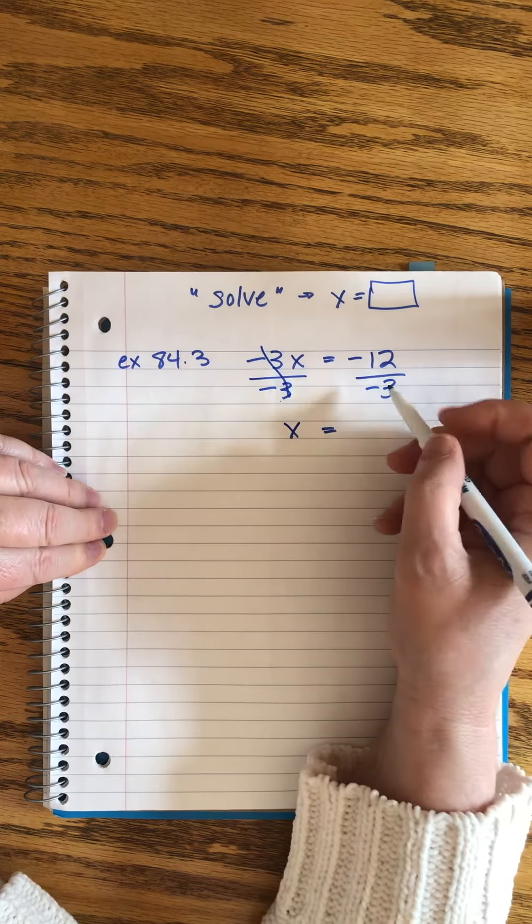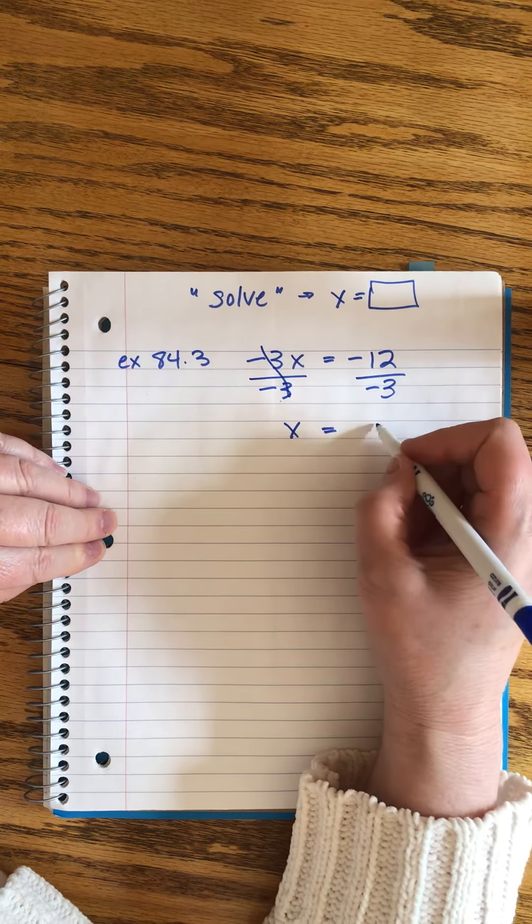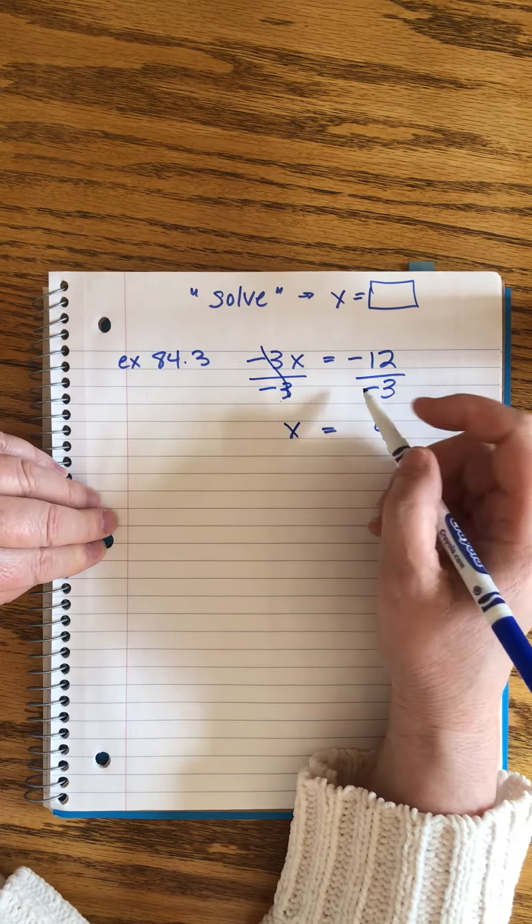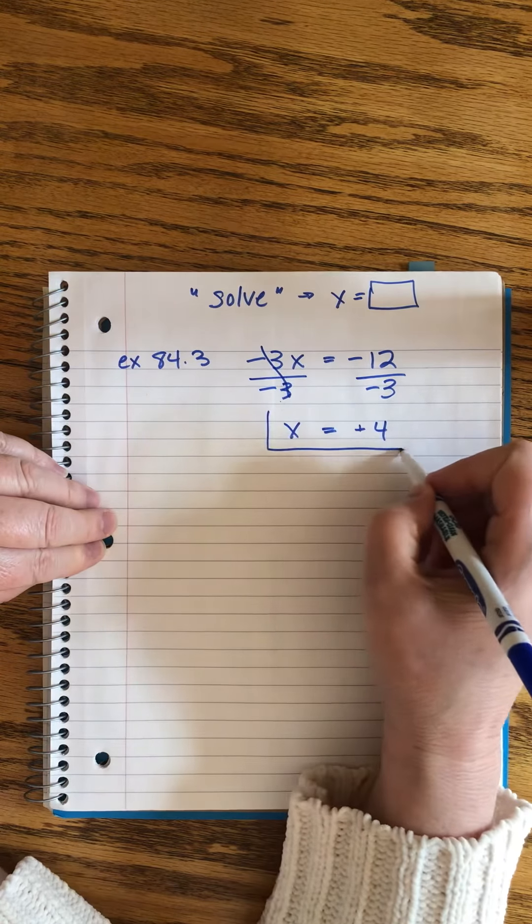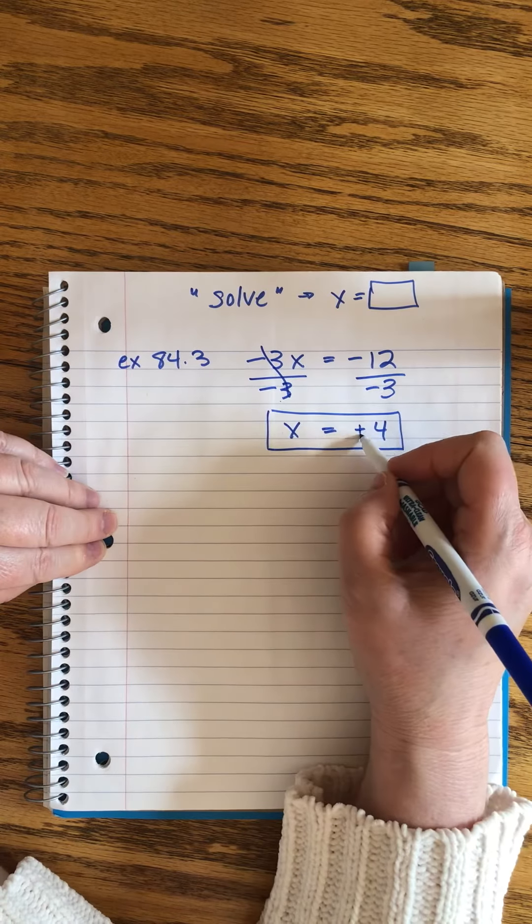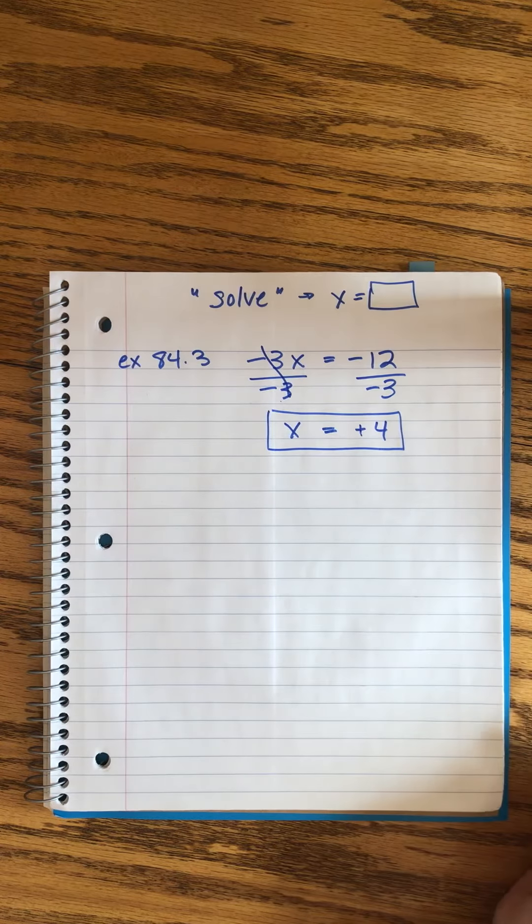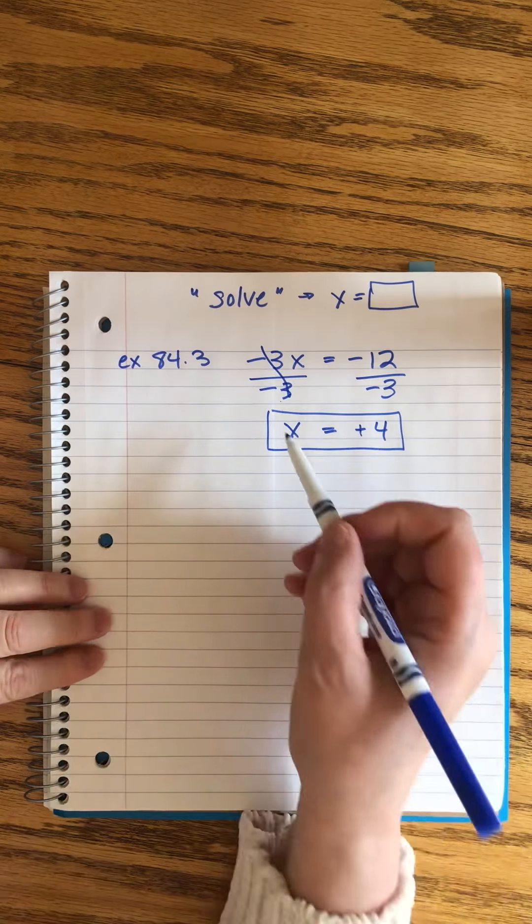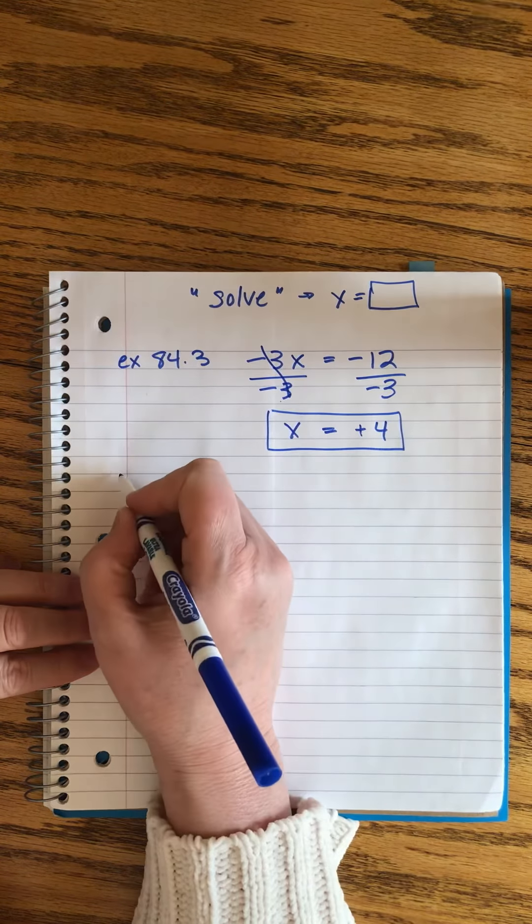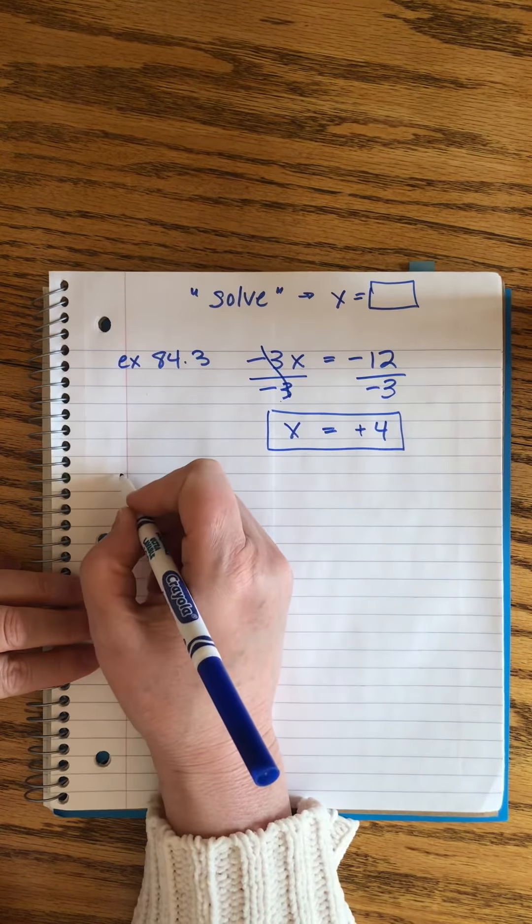But we can use straight division because we don't have any fractions. This cancels. x equals, I'll do the number first. Twelve divided by 3 is 4. Two negatives go together to make a positive. It's not necessary to show the positive sign, but sometimes I think it's helpful. So we can divide by negative numbers.